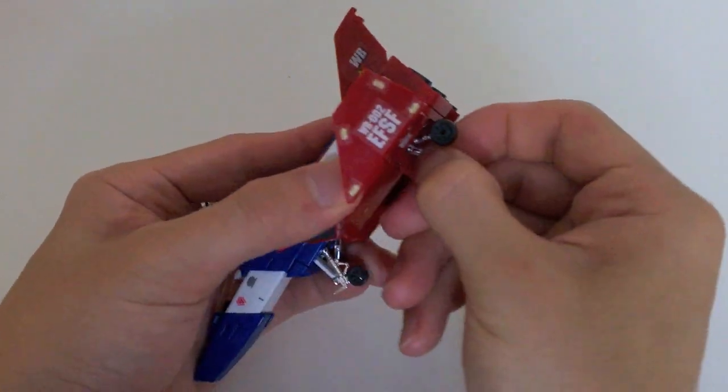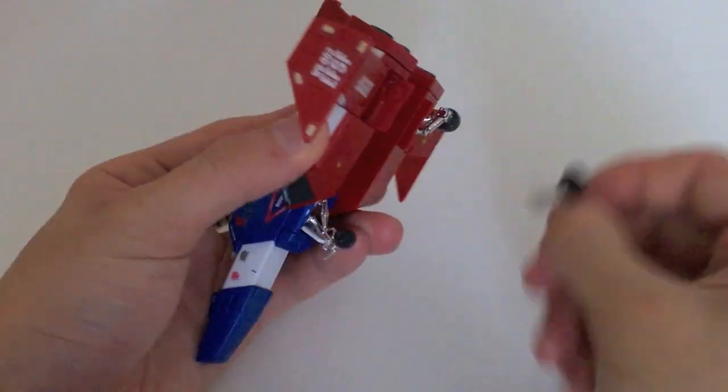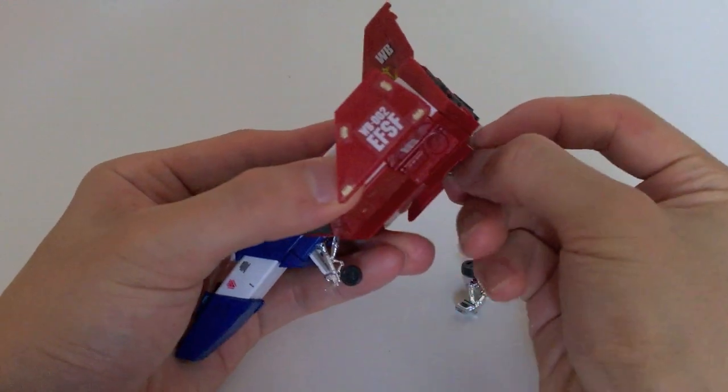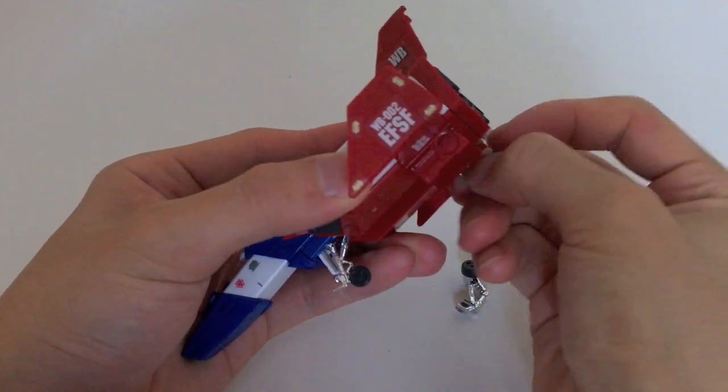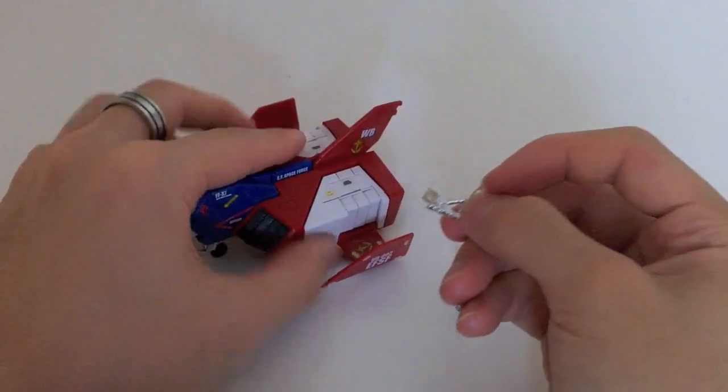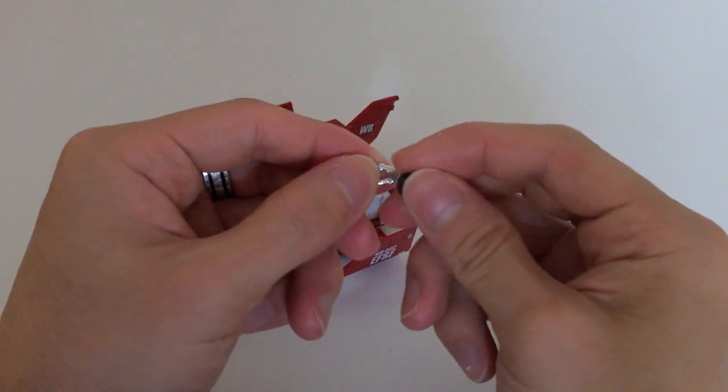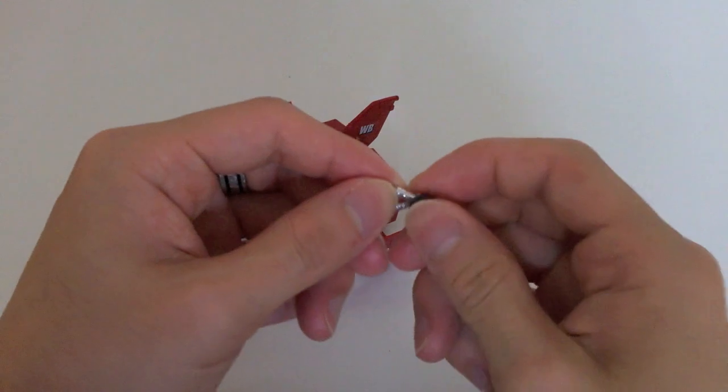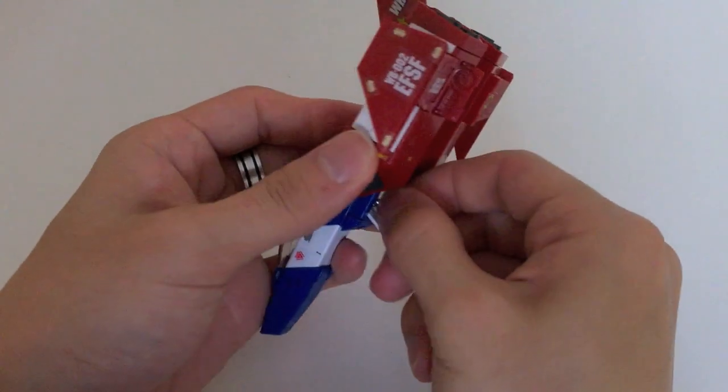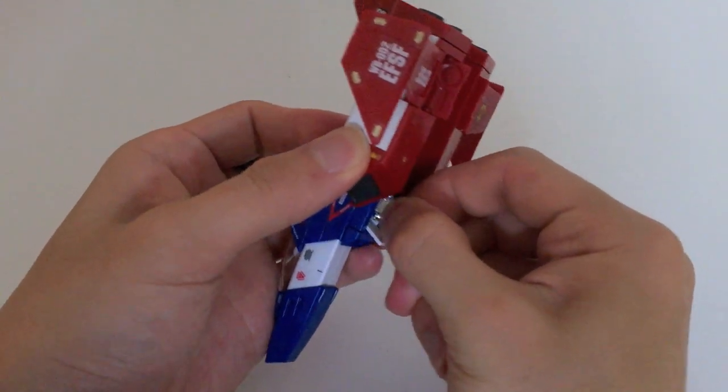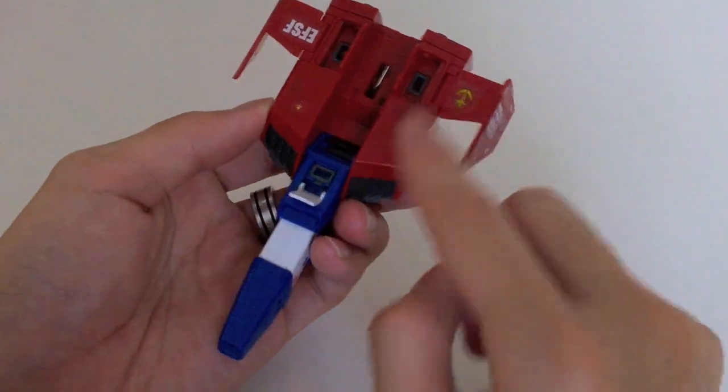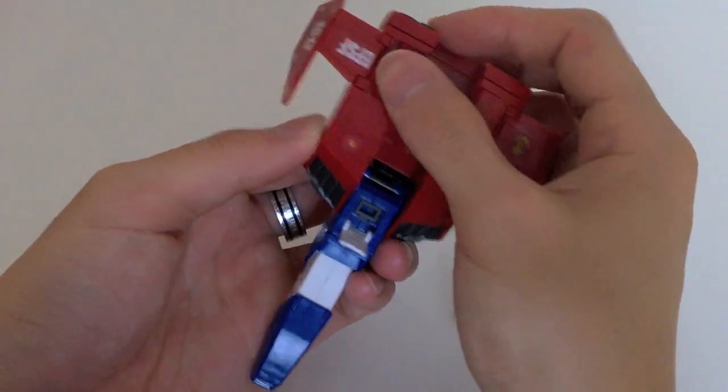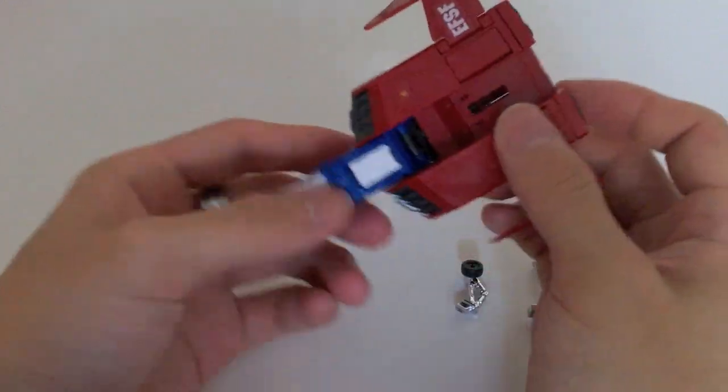And once we pop off the landing gear, which are attached to the inside with polycaps, takes a little bit of wiggling around. You'll see that there are the open landing gear bays and you can actually close the doors over them, which is a really nice touch so there are no holes underneath.